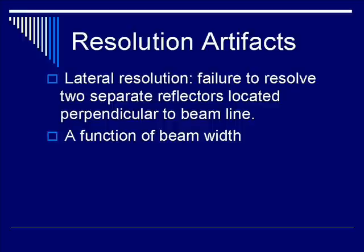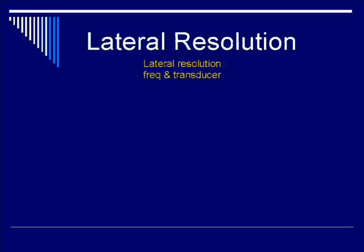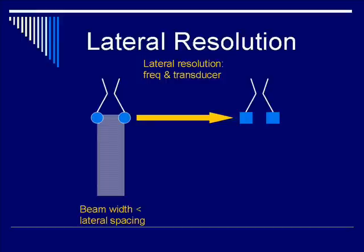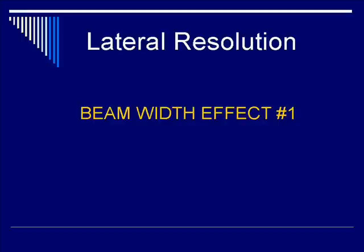Let's go on and talk about lateral resolution. By definition, lateral resolution is defined as the failure to resolve two separate reflectors located perpendicular to the beam line. Aside from being a function of frequency, lateral resolution is also a function of beam width or transducer design. Taking two point reflectors located laterally to each other, if the beam width is less than the lateral spacing of the two objects, you will be able to resolve the two objects — there will be two pixels separated by lateral distance.